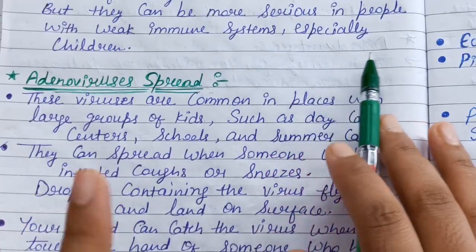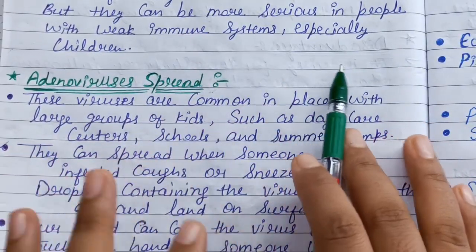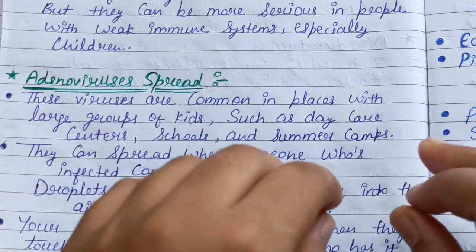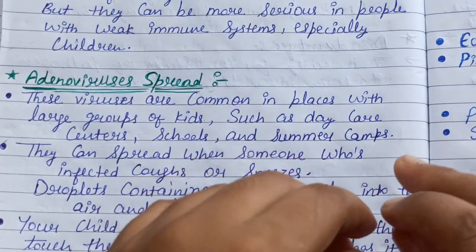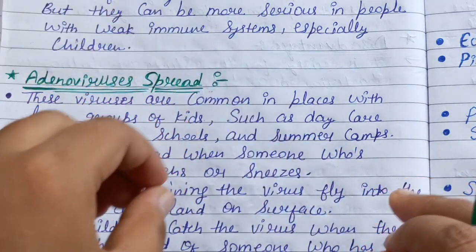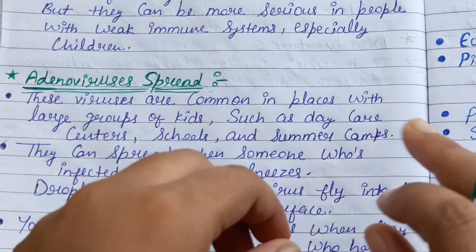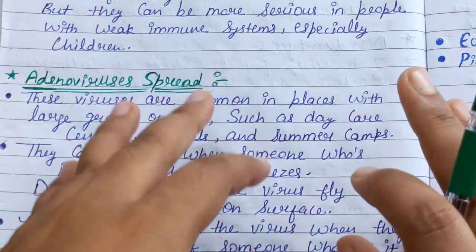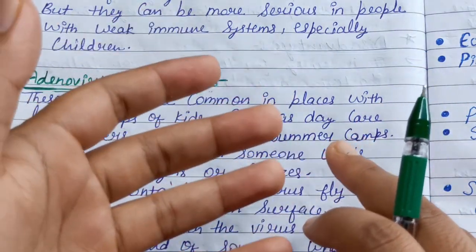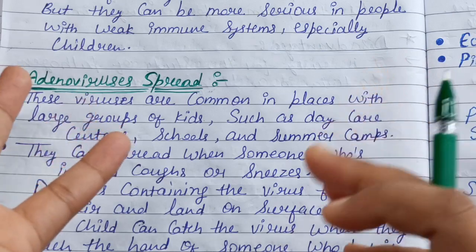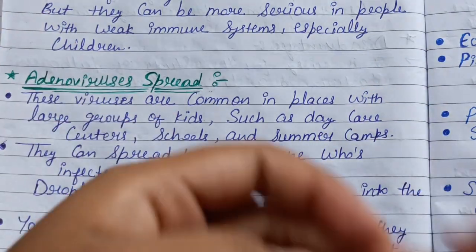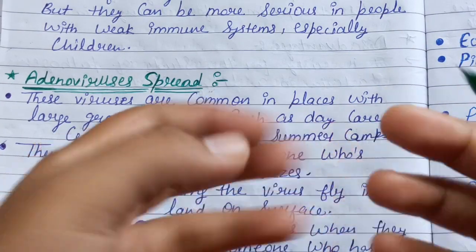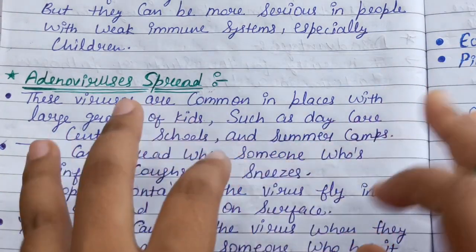But it can be more serious in people with weak immune systems, especially children. In some cases, there are very serious conditions where people's immune system has been weakened. In that condition, the illness can progress quickly and last for a long time, and they cannot recover quickly.